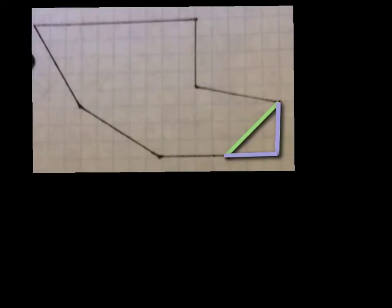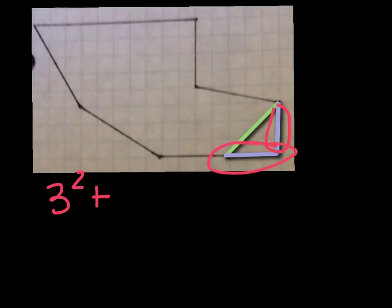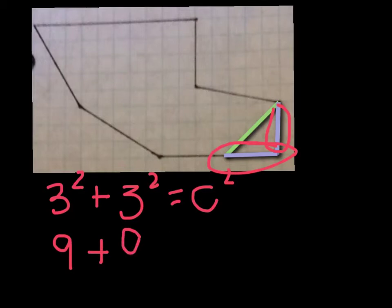Now we are going to find the length of the next green side. So a squared, which is this side, has 3 units, so 3 squared, plus b squared, which is also 3 units, so 3 squared. So 3 squared plus 3 squared equals c squared. 3 squared is 9, plus 3 squared, which is also 9, equals 18. So c squared equals 18.